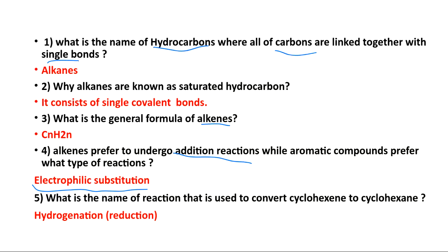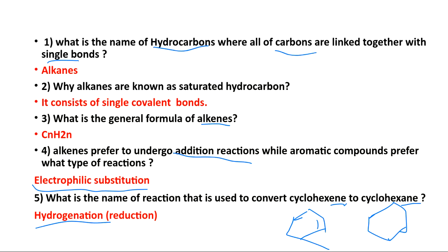Question: what is the name of the reaction used to convert cyclohexene to cyclohexane? Cyclohexene is a six-membered ring with a double bond inside. To convert it to cyclohexane — no more double bond — you perform a hydrogenation reaction: cyclohexene reacts with hydrogen gas in the presence of a nickel catalyst to give cyclohexane. Hydrogenation means addition of hydrogen; in other words, it is a reduction reaction.